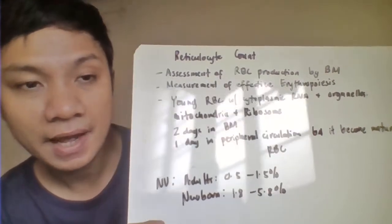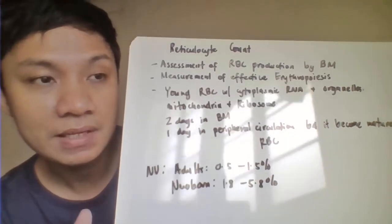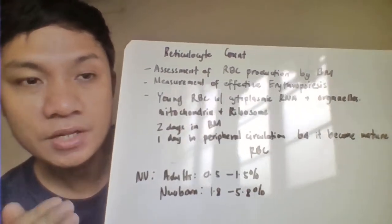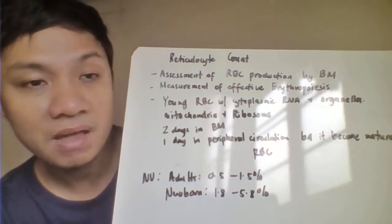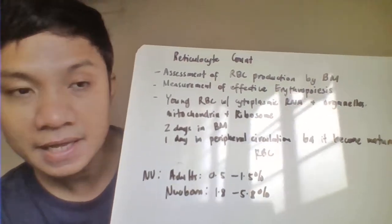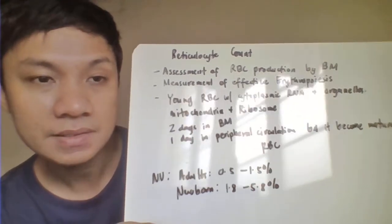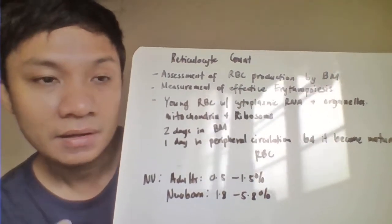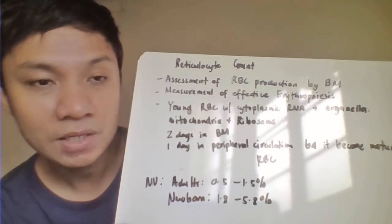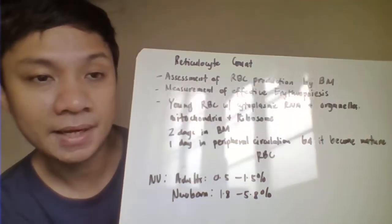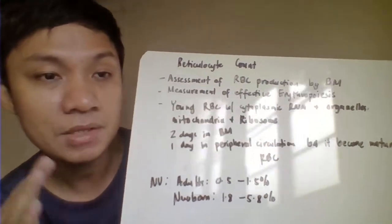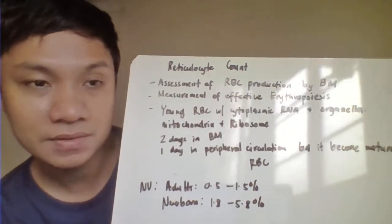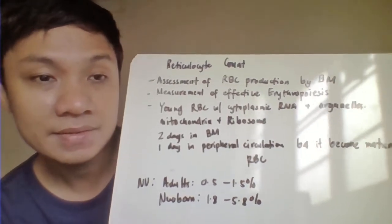A high reticulocyte count signifies that your bone marrow is producing new RBCs as a replacement for those which have been lost or damaged, like in the case of a hemolytic reaction where RBCs rupture. We can assess if the bone marrow is producing the necessary compensation in a patient with hemolytic reaction by means of the reticulocyte count — a higher count means the bone marrow is producing new RBCs to compensate for red cell destruction.